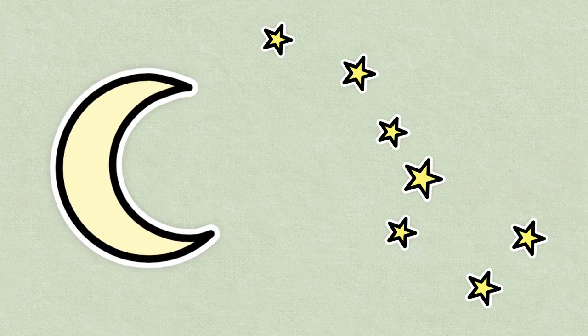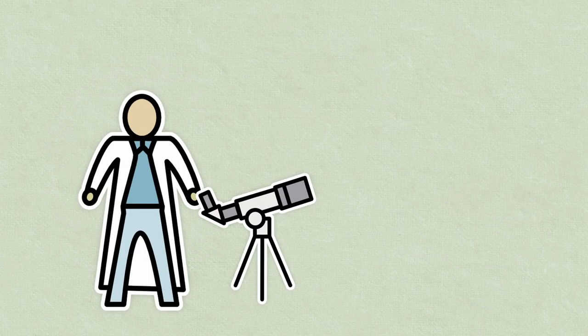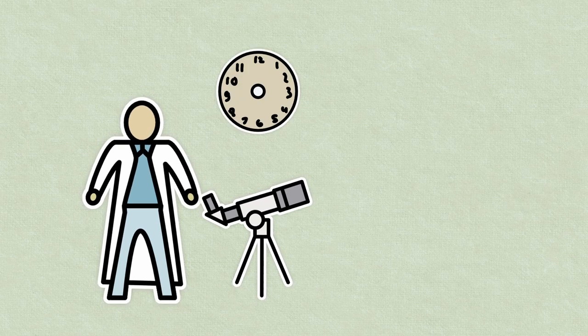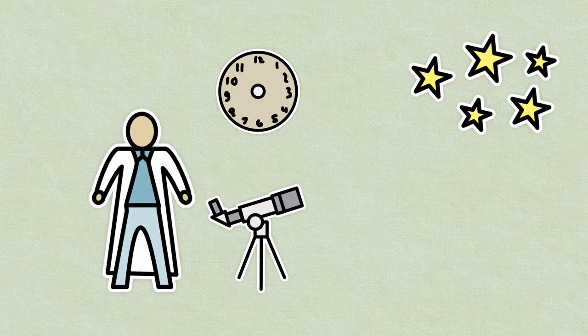A constellation is a group of stars that form a pattern or a shape in the night sky. People have been looking at the stars for thousands of years and have noticed that some stars seem to be grouped together in certain patterns.